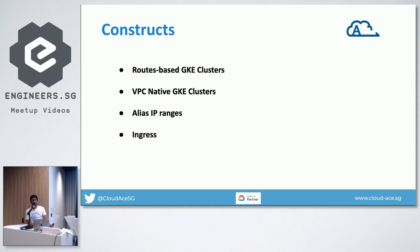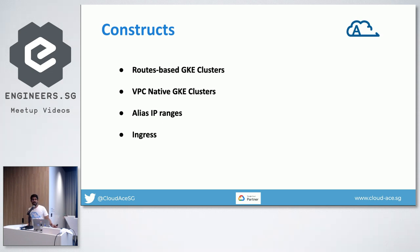Before we go deeper into this, there are a few constructs we'd like to walk you through. When we create a Kubernetes cluster in Google Cloud, there are two ways it can be created — essentially two kinds of GKE clusters. One is called a routes-based GKE cluster, which is the traditional way of doing it until last year. When you create a Kubernetes cluster, there are three different IP ranges: one for the host, one for the pods, and one for the services.